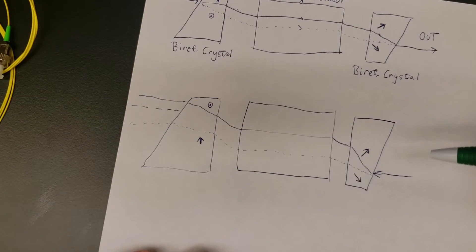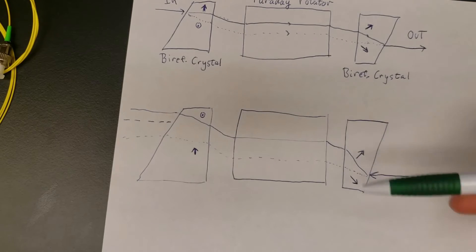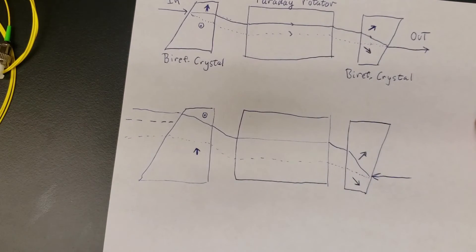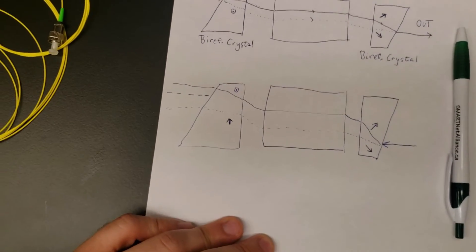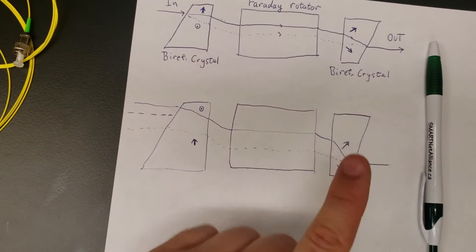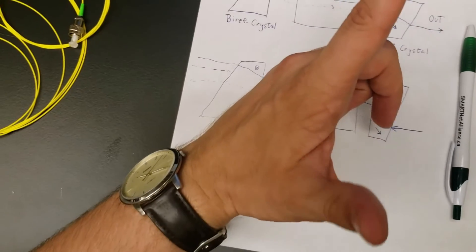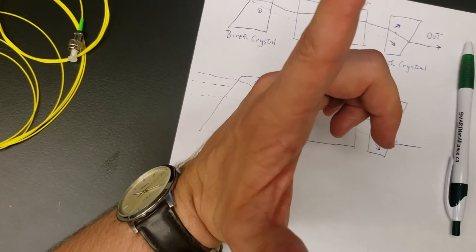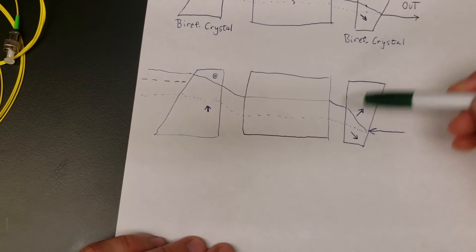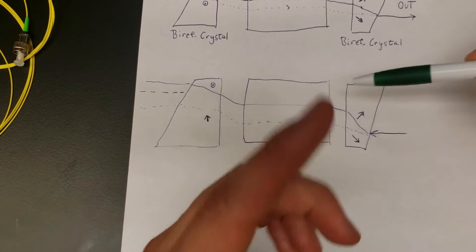Now let's think about what happens if we send light in the other direction. Here we see the same isolator in reverse, sending light into this birefringent crystal first, then through the Faraday rotator, and back towards this crystal. We'll assume the polarization is initially identical to what we had before—one rotation at 45 degrees this way, the other at 45 degrees the other way. The birefringent crystal causes the beam to split up into two components, and these go into the Faraday rotator.